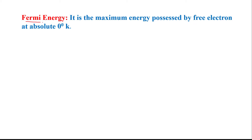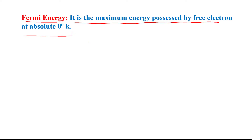Now we discuss Fermi energy. What do you mean by Fermi energy? Fermi energy is the maximum energy that is possessed by a free electron at absolute zero degree Kelvin. This is called Fermi energy. These are the basic concepts of Fermi level and Fermi energy.